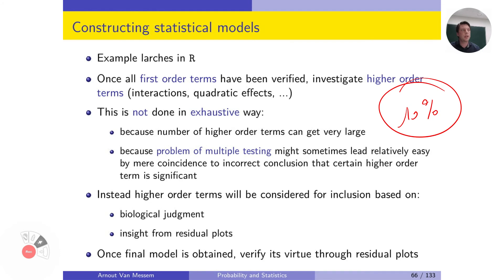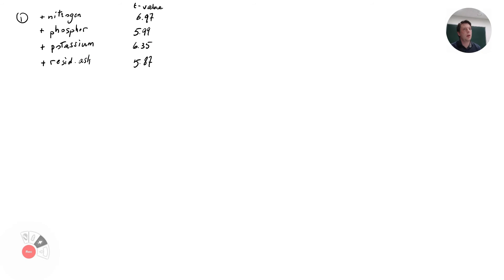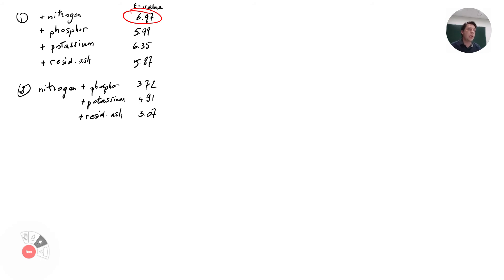In our example with the largest dataset, we had four minerals to add: nitrogen, phosphor, potassium, and residual ash. We construct a one-predictor model for each and observe t-values of 6.97, 5.99, 6.35, and 5.87 respectively. We select the one with the highest absolute t-value, which is nitrogen. Nitrogen becomes the first predictor, and then we build models pairing nitrogen with each of the remaining predictors. The most significant addition is potassium.